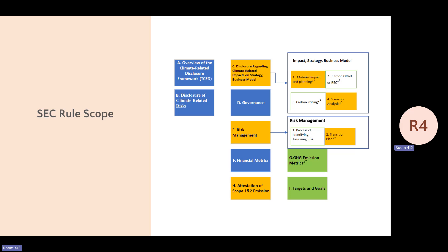The emission metrics basically require you to have all historical data from scope one, scope two, and scope three. You also have to reveal your calculation methodology and the time period of the data used to calculate.